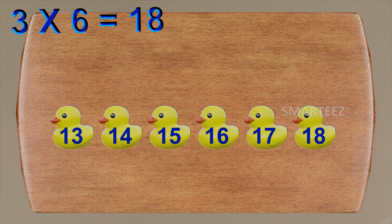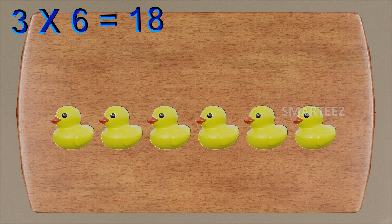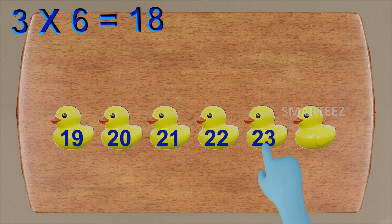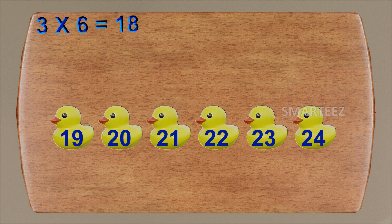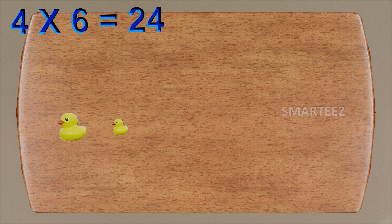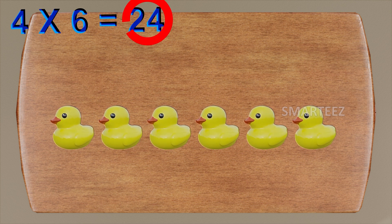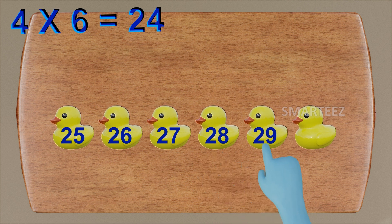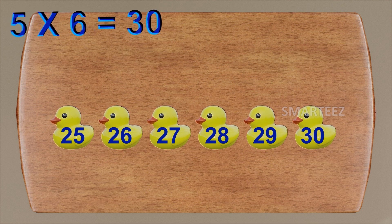Let's add the fourth set of six rubber ducks. Then we will start counting after eighteen: nineteen, twenty, twenty-one, twenty-two, twenty-three and twenty-four. For the fourth set of six, we can write it as four times six is twenty-four. Let's add the fifth set of six rubber ducks. Then we will start counting after twenty-four: twenty-five, twenty-six, twenty-seven, twenty-eight, twenty-nine and thirty. For the fifth set of six, we can write it as five times six is thirty.